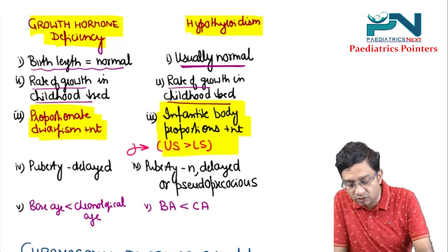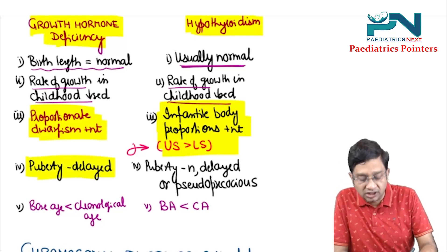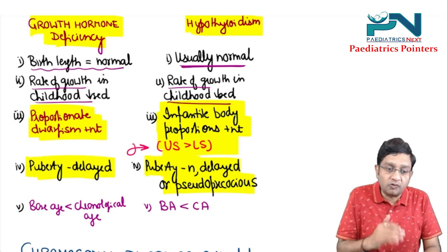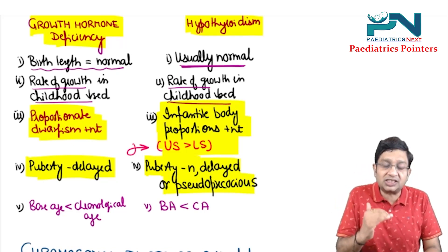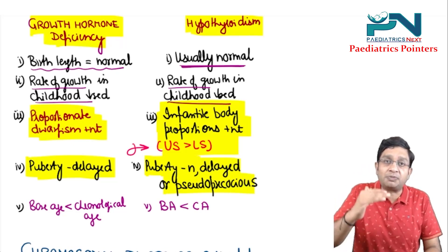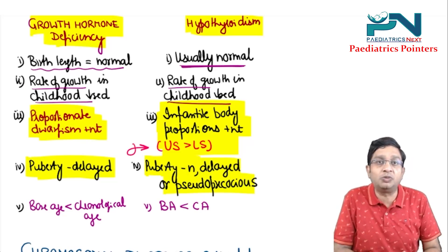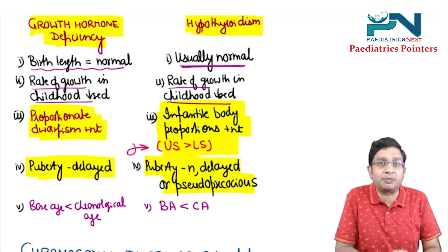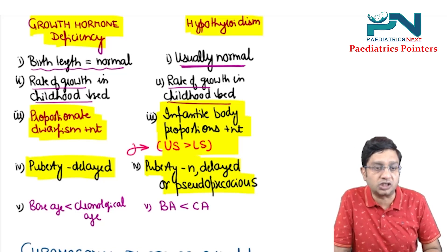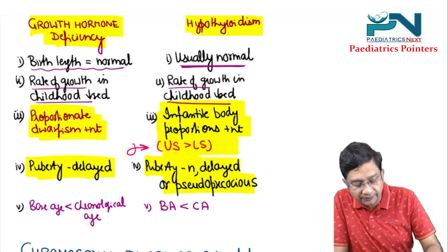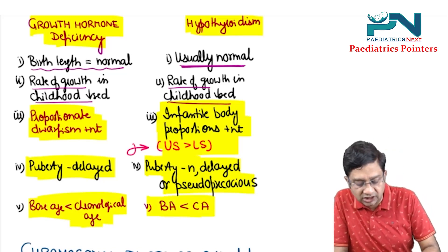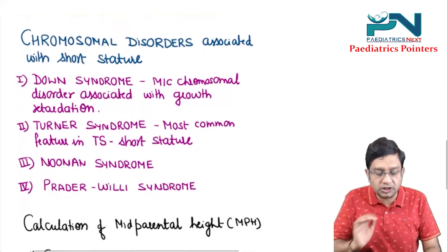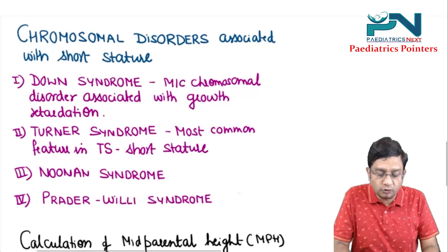Puberty is delayed in GH deficiency. In hypothyroidism, puberty is normal, delayed, or even pseudo-precocious. The reason for pseudo-precocious puberty is that TSH levels increase to a level where they can stimulate FSH receptors — TSH stimulating the FSH receptor leads to pseudo-precocious puberty. In both conditions, bone age is less than chronological age.